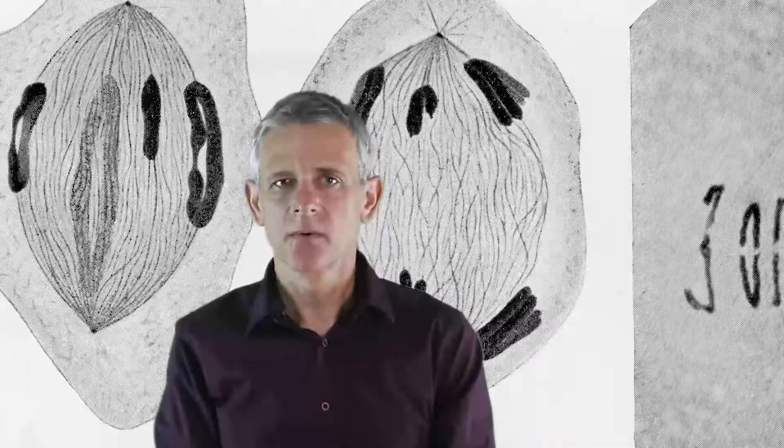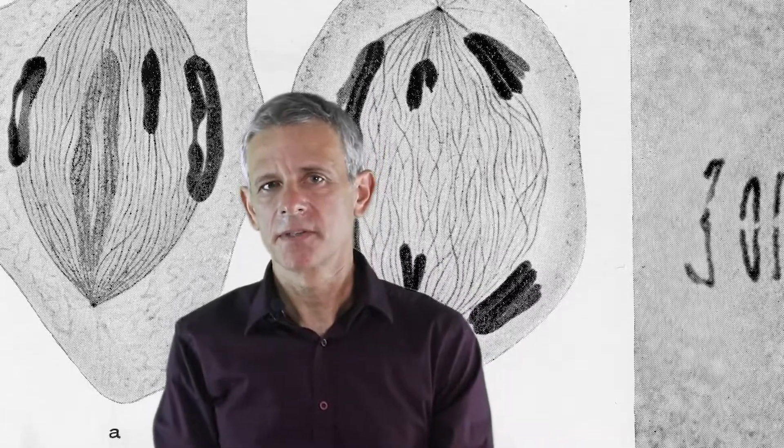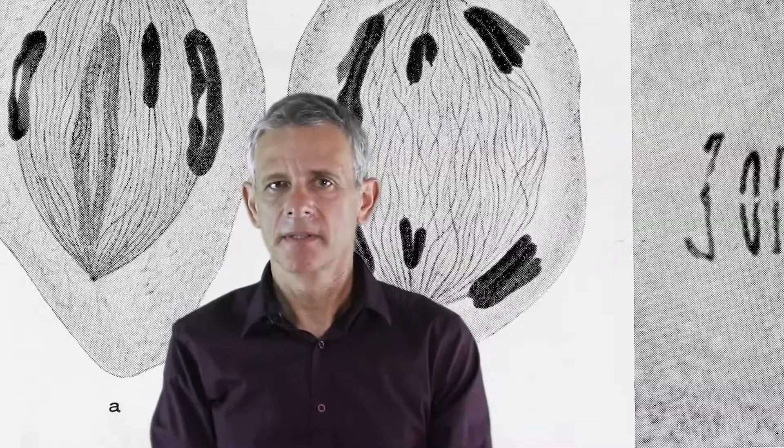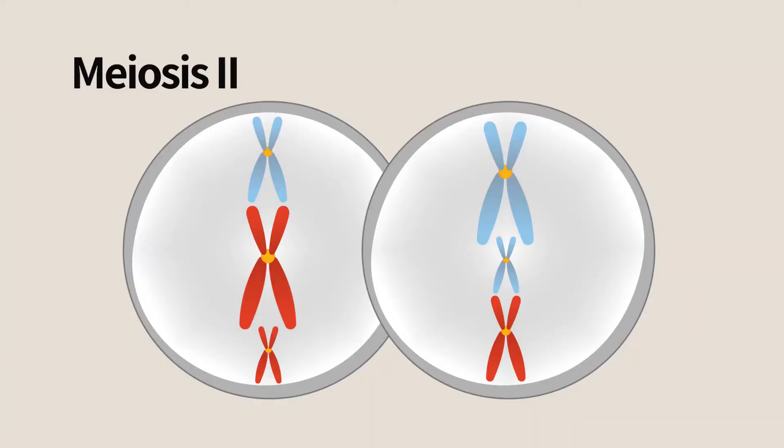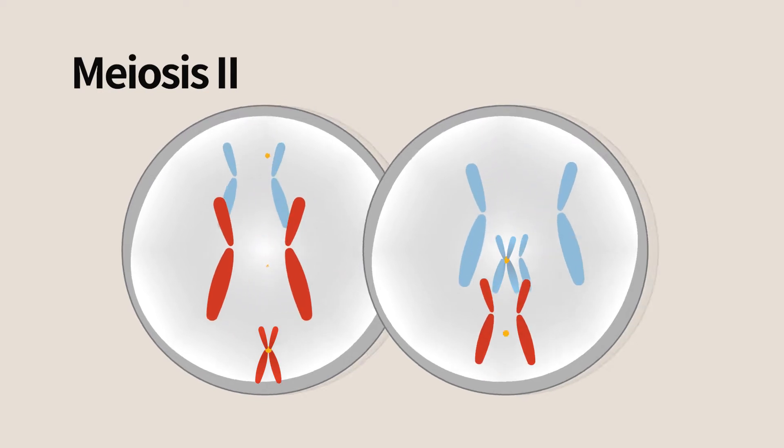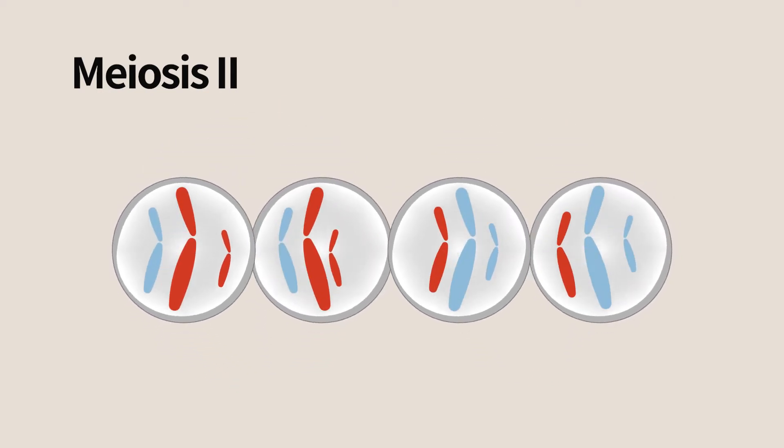The next stage, meiosis 2, is similar to the mitotic division in which the sisters are separated. At the end of this second meiotic division, we have now four cells, each with one set of homologues, that each has one sister chromatid.